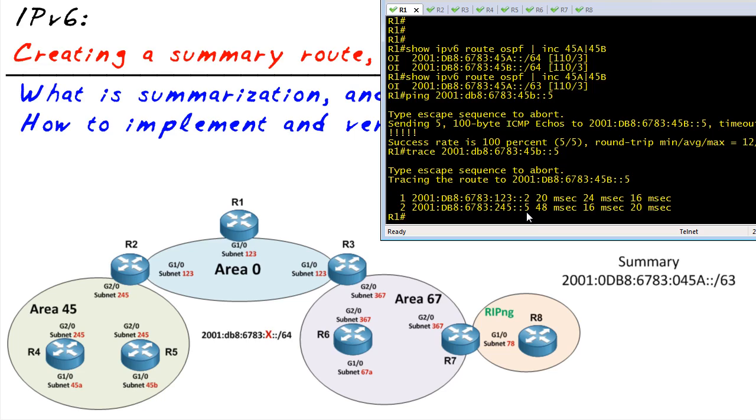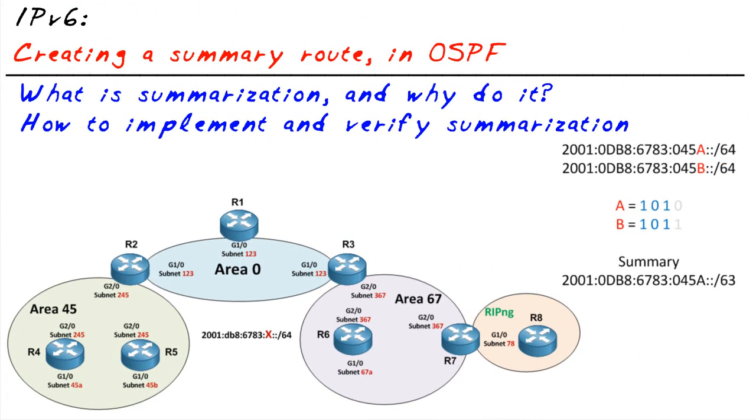In this micronugget we've taken a look at the concept of summarization, and in our example we created a single summary route that represented two more detailed routes. Now just saving one routing entry on a local topology isn't a big deal, but in a larger environment like the internet with IPv6, we could have a single route that represents tens of thousands of more detailed networks. And the concept of summarization applies to IP version 4 and IP version 6. I hope this has been informative for you, and I'd like to thank you for viewing.